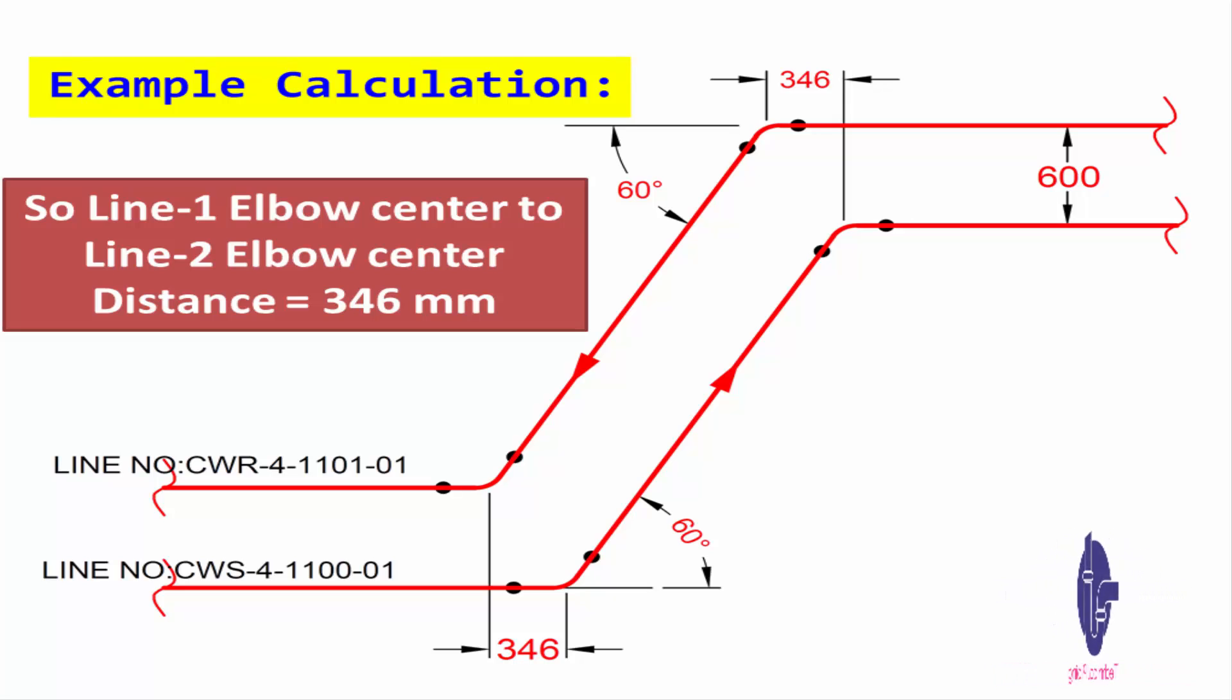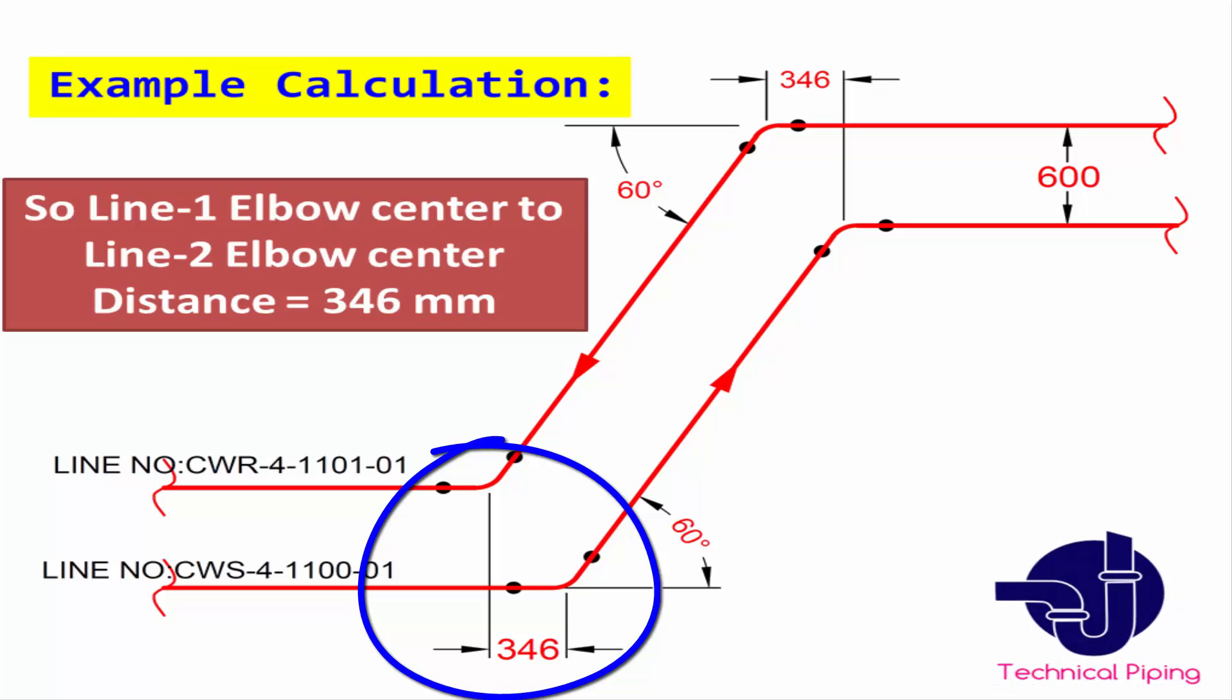So we have to roll CWR pipeline 346 millimeters horizontally before CWS pipeline.